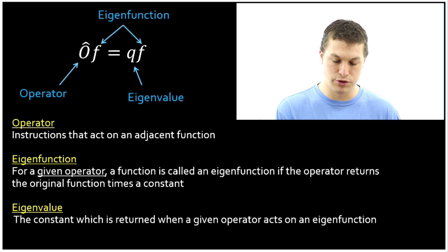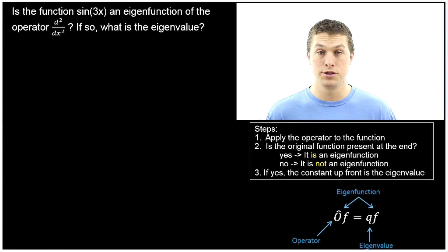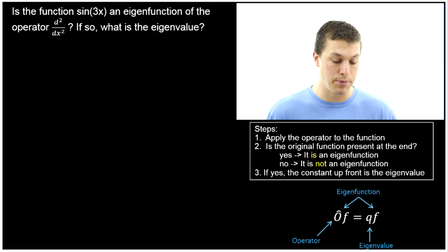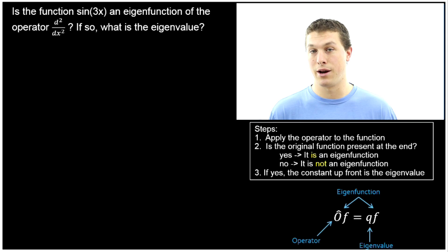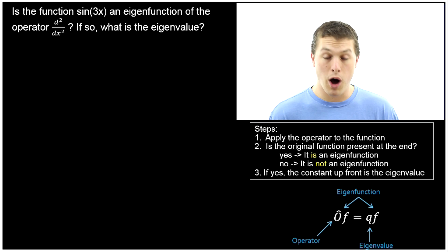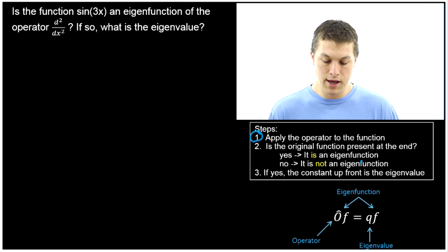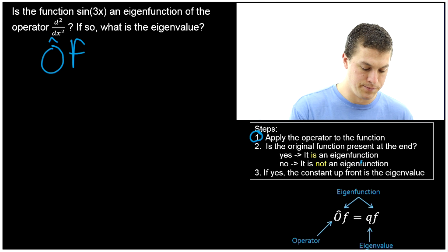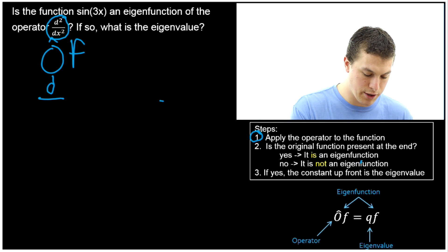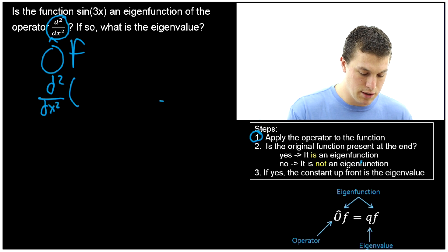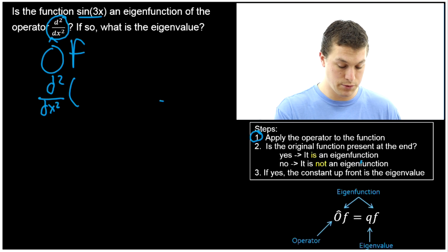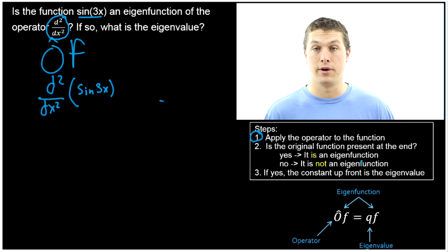Let's make this more concrete with two examples. The question is: is the function sine of 3x an eigenfunction of the second derivative operator with respect to x? If so, what is the eigenvalue? Step one is to apply the operator to the function — that's the left-hand side. Our operator is the second derivative, and our function is sine of 3x, so we apply d²/dx² to sine of 3x.